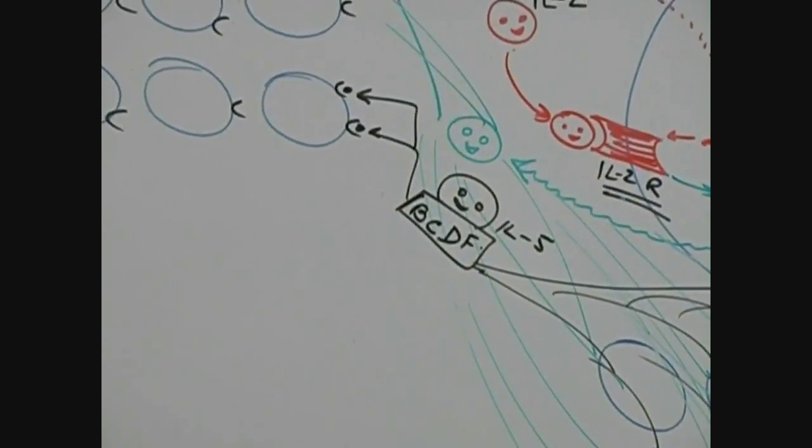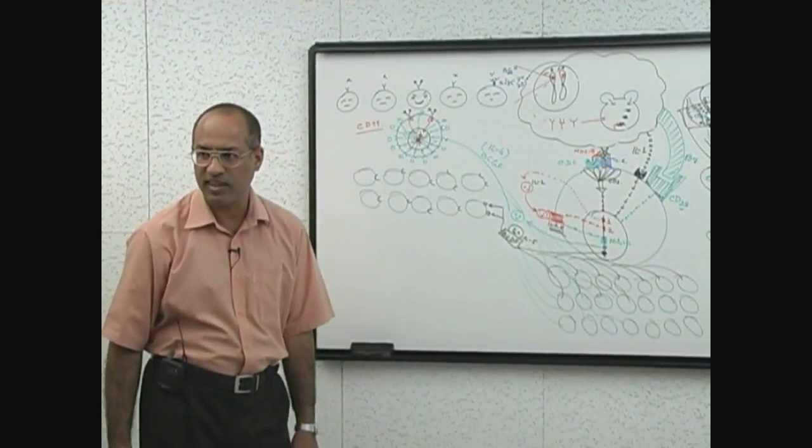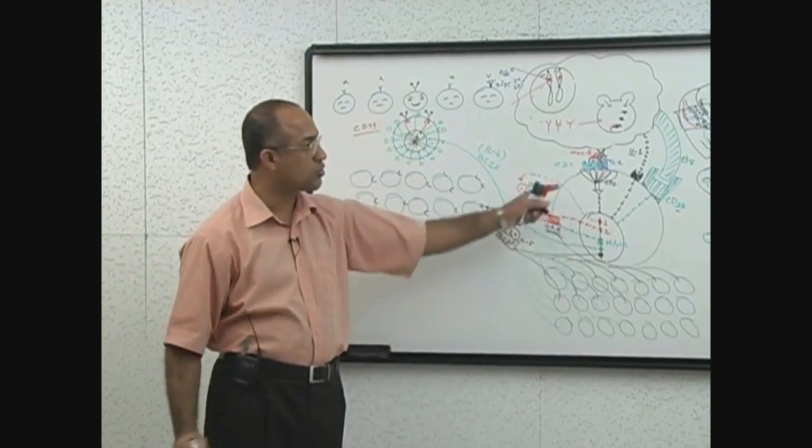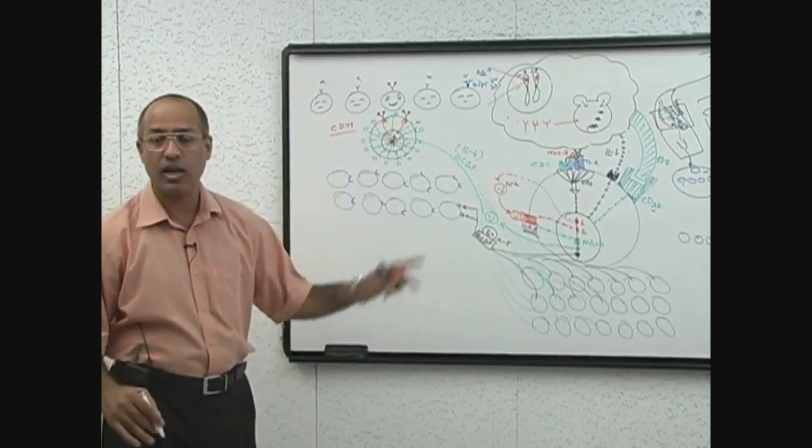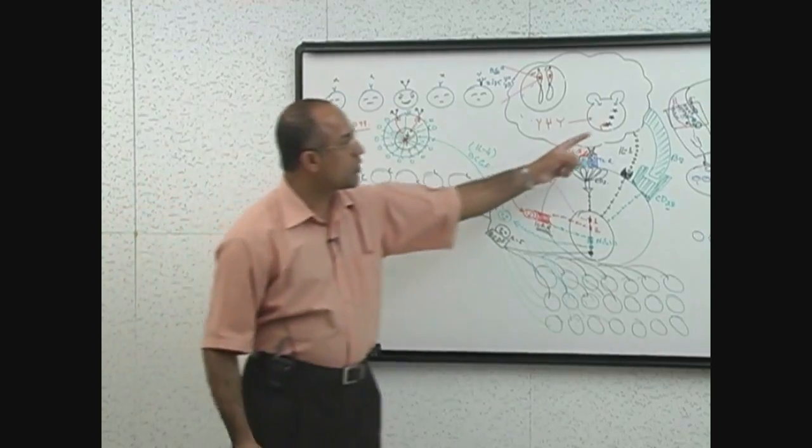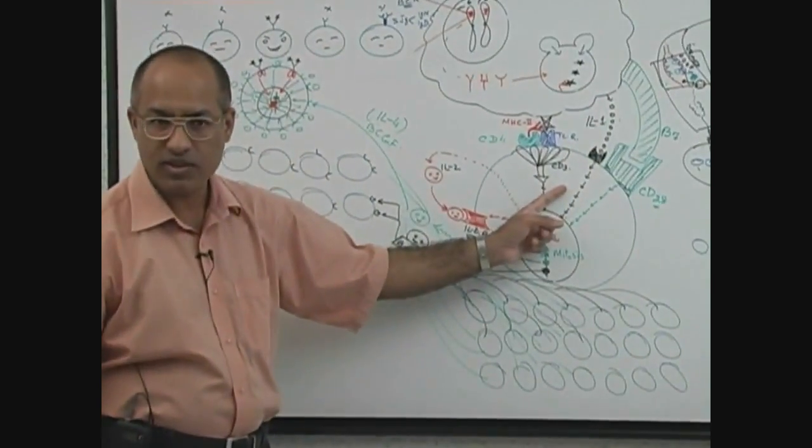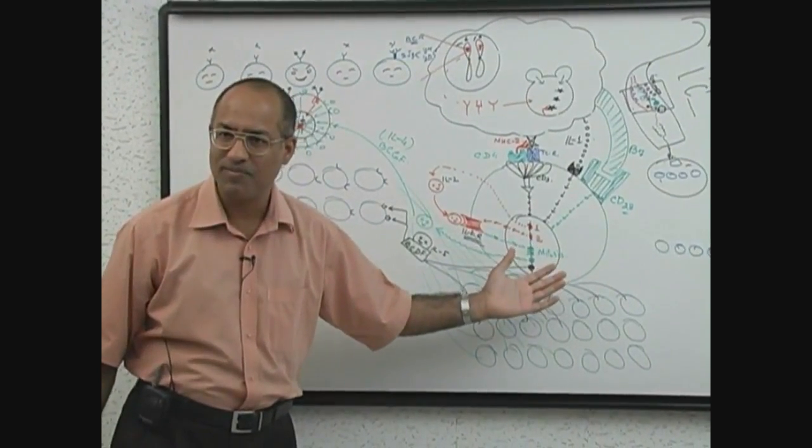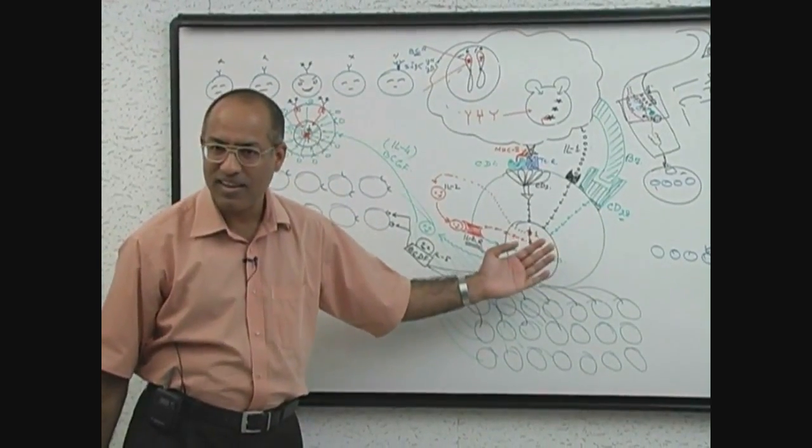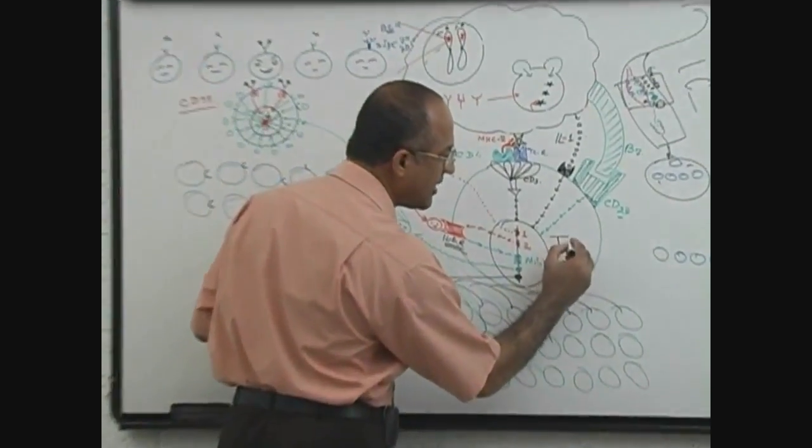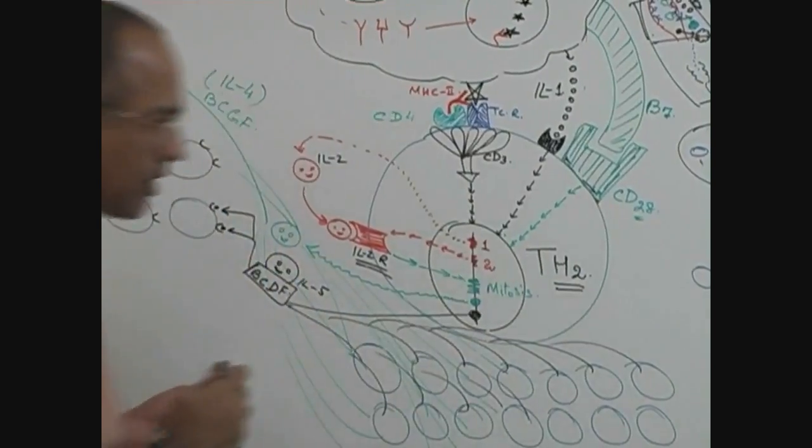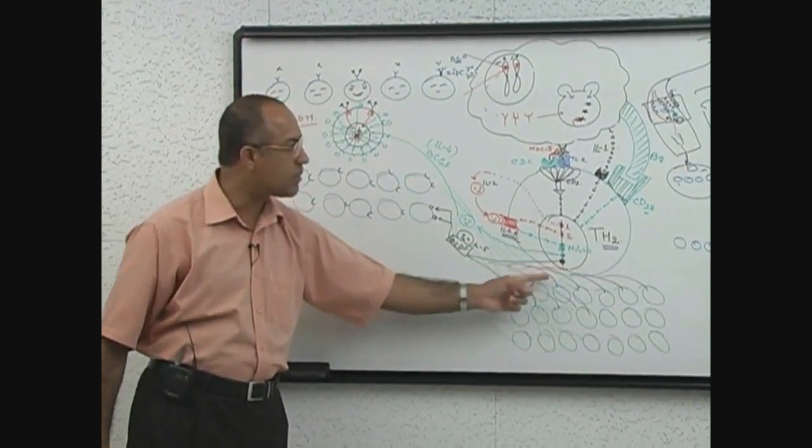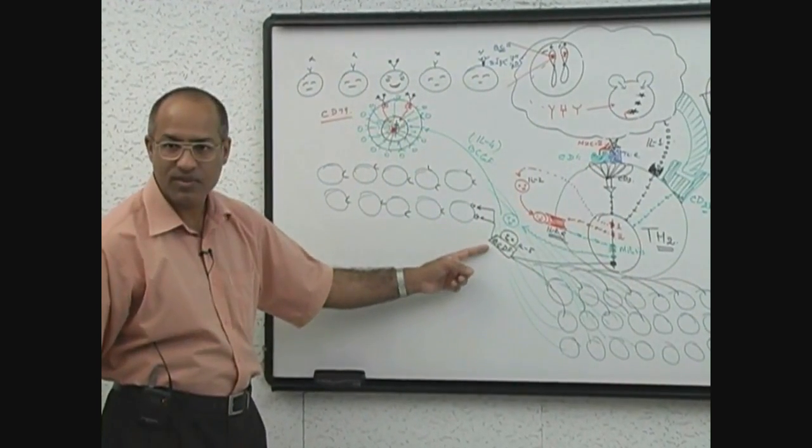You see in the diagram interleukin-3 is missing. Actually interleukin-3 is also produced by the T cells, but that does not work here, that works somewhere else. Later on you will learn interleukin-3 produced by the T cells work on the bone marrow. Now you know interleukin-1 is from macrophage coming and stimulating the T cells. Now look, these T cells are helping the B cells. So this T cell should be called T helper cell. Later on you will learn, this very special type of T helper cell is called T helper 2 cells.